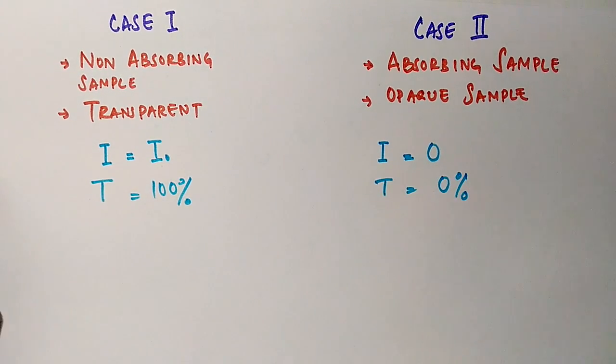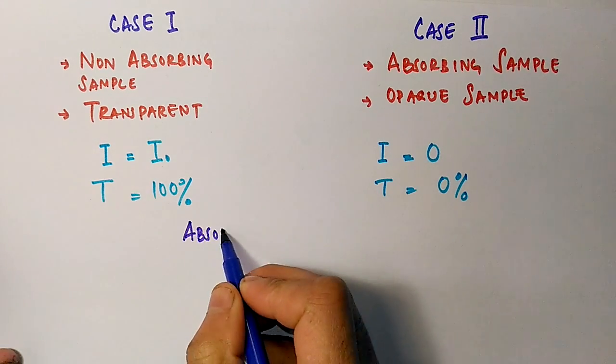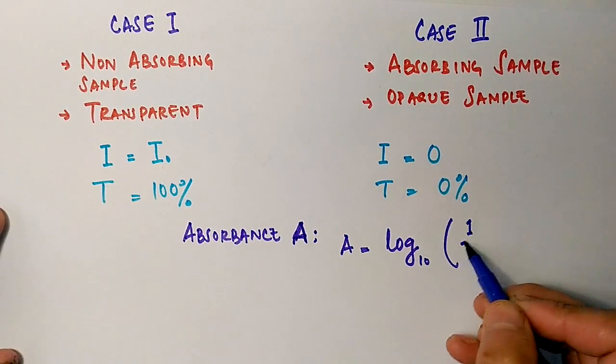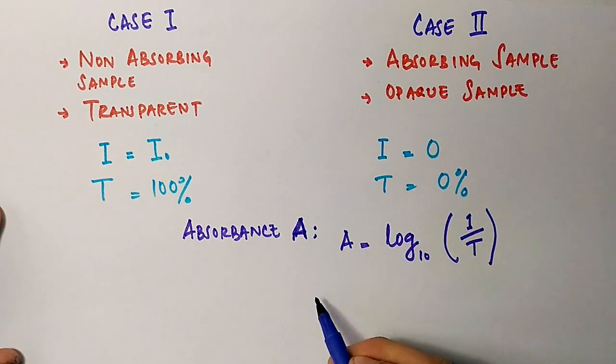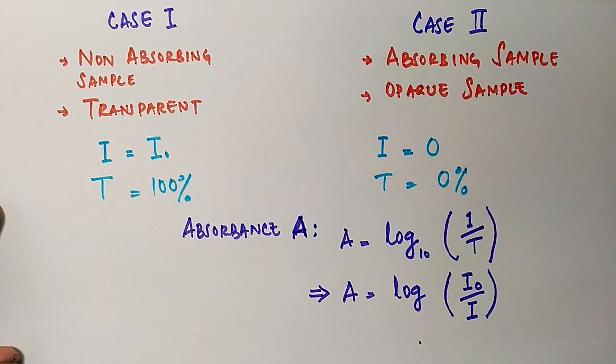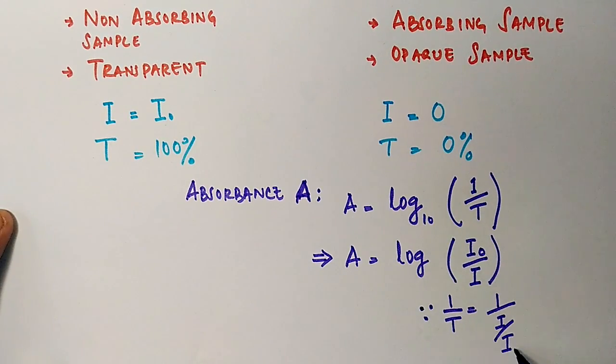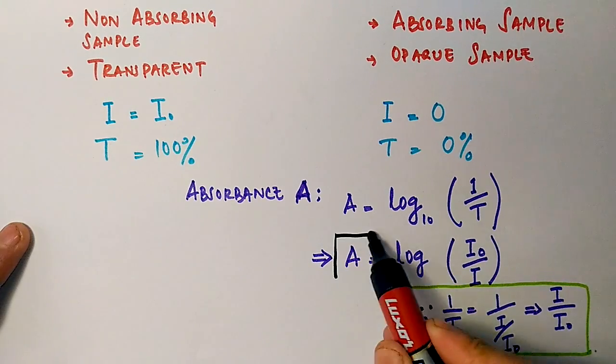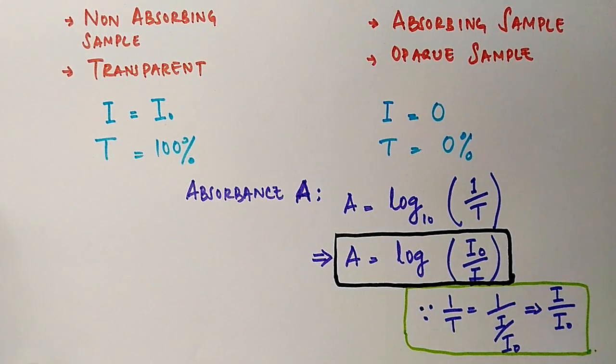So we can see here the absorbance is equal to log of 1 by T to the base 10, or it can be written as A equals log of I₀ by I. So we put this value into the equation and we get the absorbance.